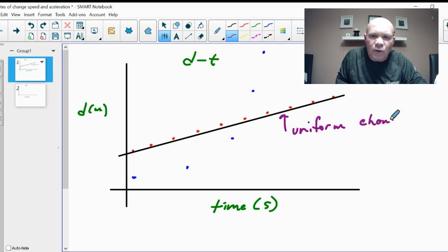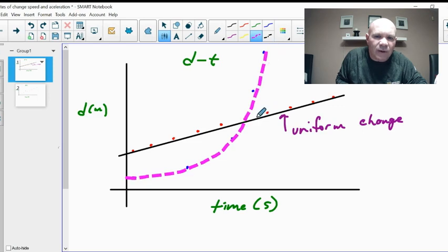Uniform meaning it goes up at a constant continuous amount each time. You'll notice the blue dots here, not quite so much. And this is the curve that we've seen previously. I'll just do that in a dot. I'm going to hand draw. I did this with a French curve on another video, but it goes like that. And what we'll see here is that this is non-uniform.